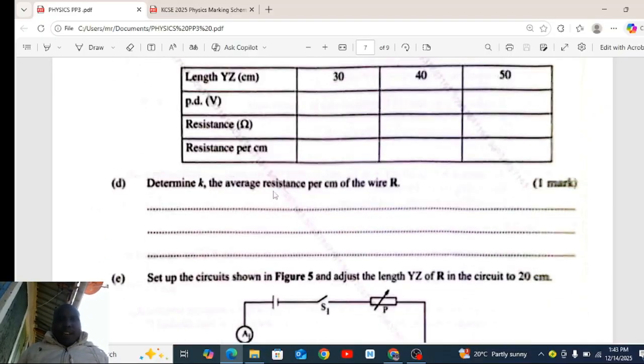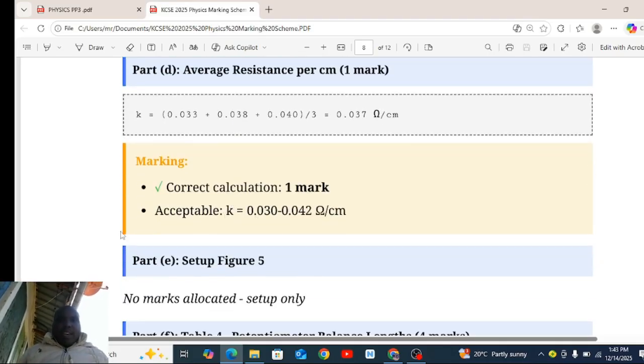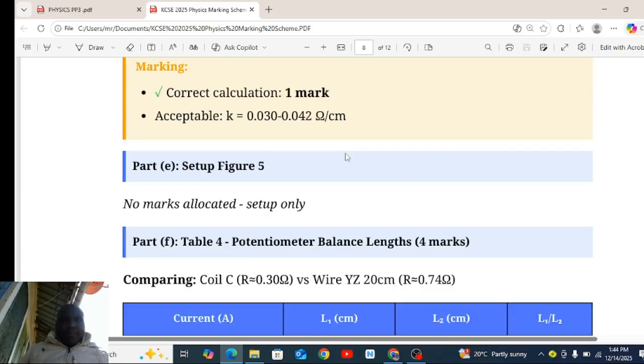Determine K, the average resistance per centimeters for the wire. K is equal to 0.033 plus 0.038 plus 0.038 plus that, and the answer is 0.037. Accept this range 0.3 to 0.42.